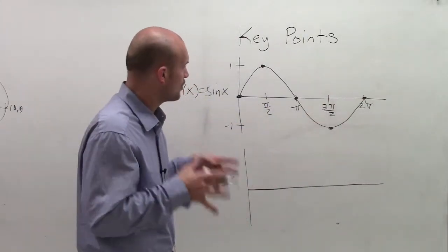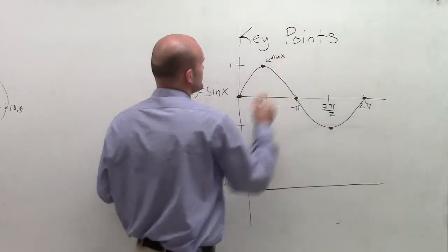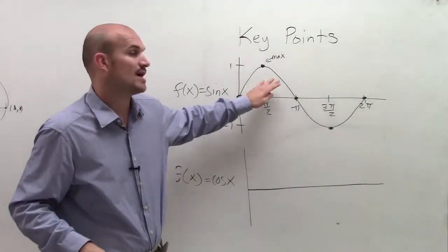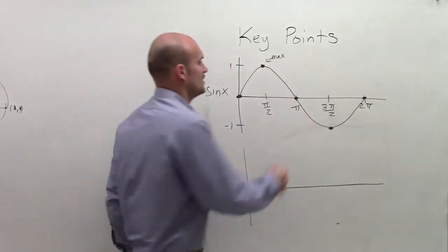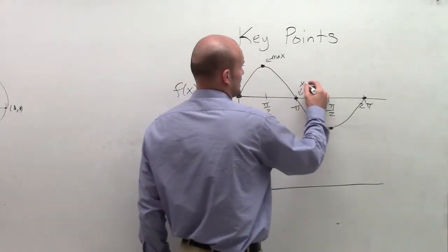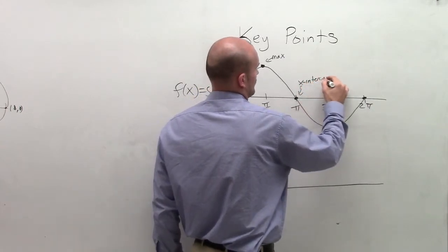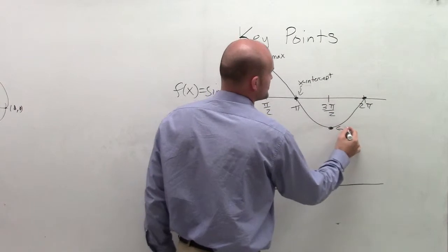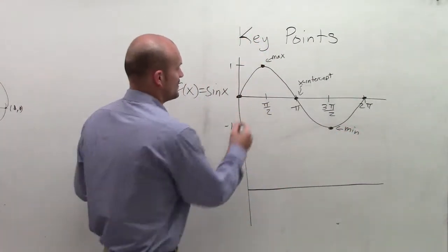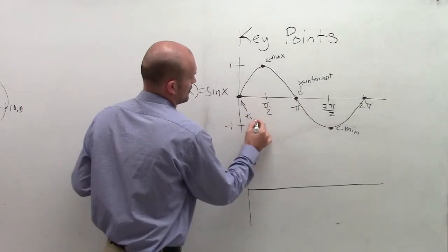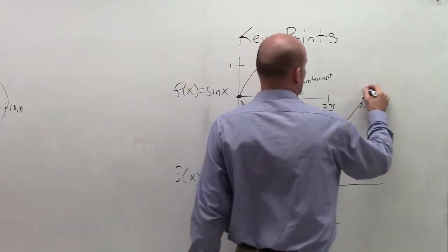So now the key important points: we have our maximum value. This is the maximum height that my graph achieved during its cycle. Here is your intercept, and then here is your minimum value that the graph achieved. And we also have intercepts right there and right here.